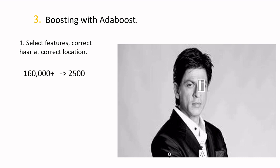You'll approximately have 160,000 feature-position combinations. At most positions, there is no meaningful white-and-black distribution, so most features will be redundant. After AdaBoost filtering, you'll be left with only around 2,500 features. AdaBoost serves two purposes: first, selecting the relevant features; second, training the classifier. It's a machine learning algorithm so it needs training data.